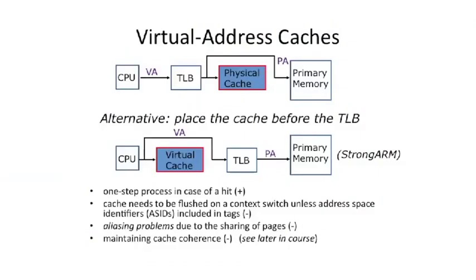Virtually addressed caches have other challenges. Because two applications can have the same virtual addresses, if you time-multiplex between application one and application two, these two applications might hit on each other's data in the cache. If two apps try to access virtual address five and they have different values stored there, in a virtually indexed cache you might end up with one process reading another process's data.